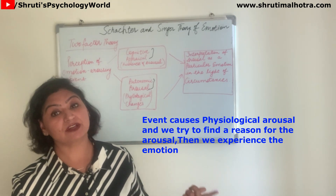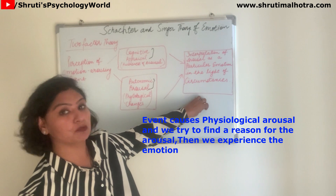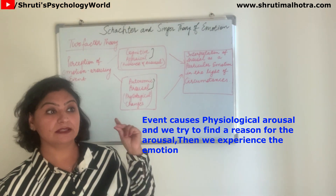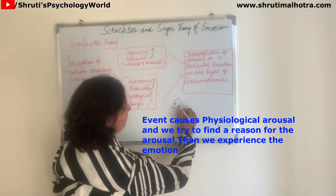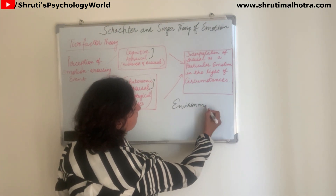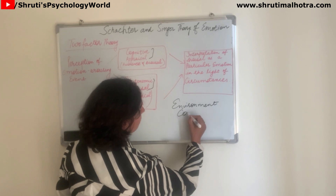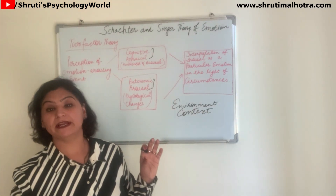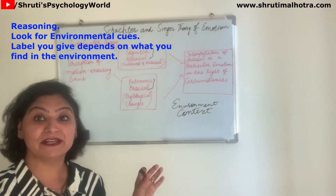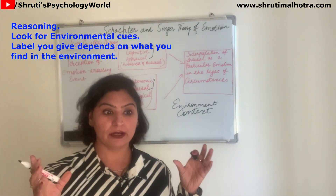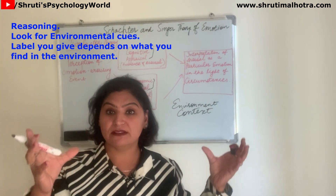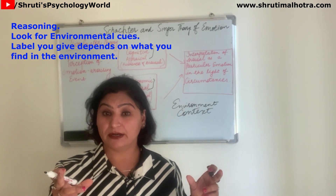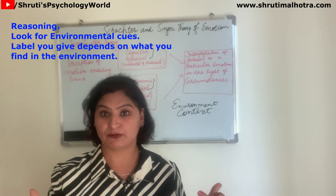Then the emotion is cognitively interpreted and labeled, and then you experience the emotion. So reasoning is involved, and the environment and context play a role. You look for environmental explanation, for cues in the environment. The label you give depends upon what you find in the environment.